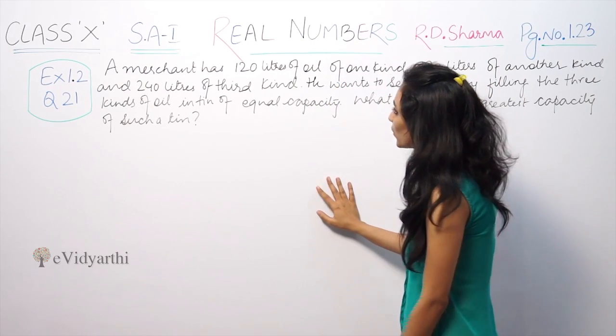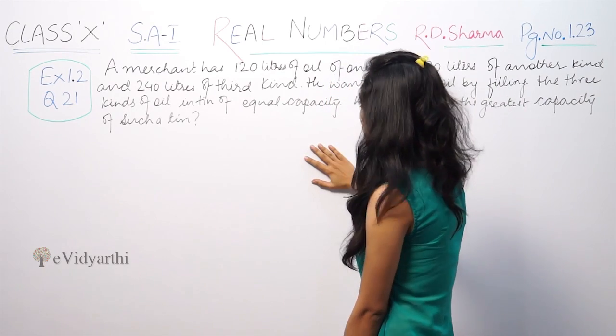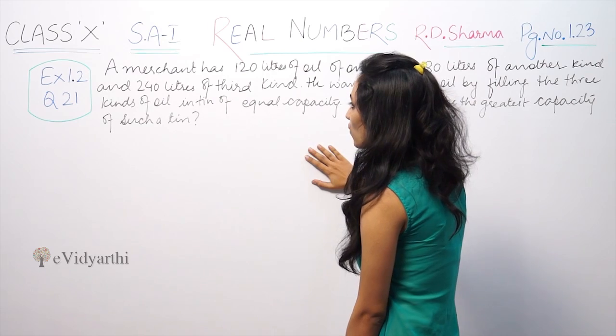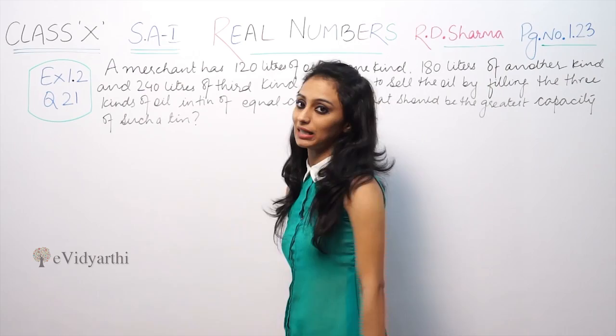A merchant has 120 liters of oil of one kind, 180 liters of another kind, and 240 liters of a third kind. He wants to sell the oil by filling the three kinds of oil in tins of equal capacity. What should be the greatest capacity of such a tin?